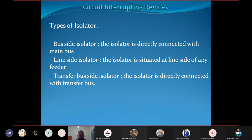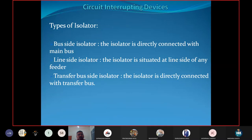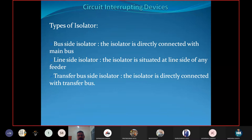The bus side isolator is defined as the isolator which is directly connected with the main bus. In a switchyard, there are two buses — the main bus and the transfer bus. The isolator connected to the main bus is known as the bus side isolator, because this classification is based on placement, i.e., at which place it is connected.